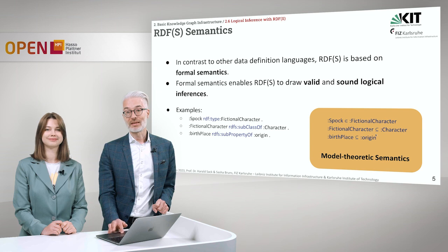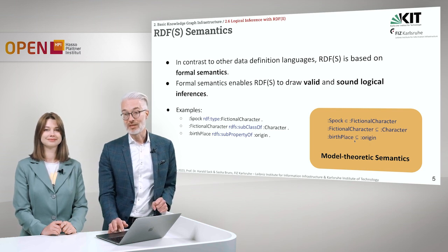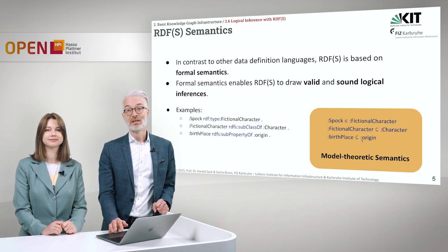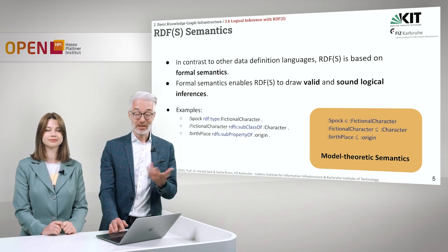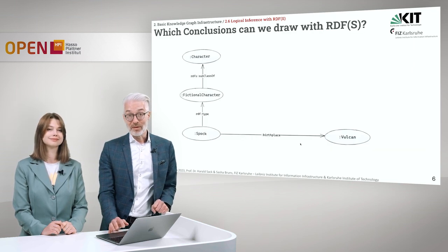Fictional character is then a subclass of character, and birthplace is also something like a subclass of origin. Here of course we are talking about properties, but this sign in logics doesn't make any difference whether we are referring to unary classes or binary things which are relations. But what does that mean?